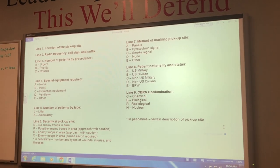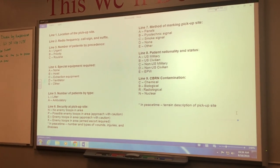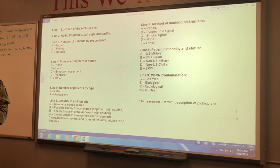Line nine is CBRN contamination. That's any chemical, biological, radiological, or nuclear threat, and that is not sent up if there is no threat.